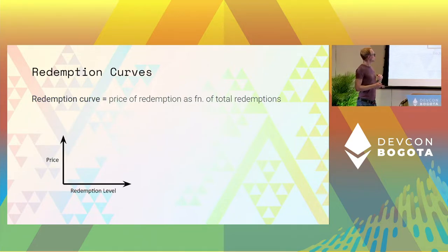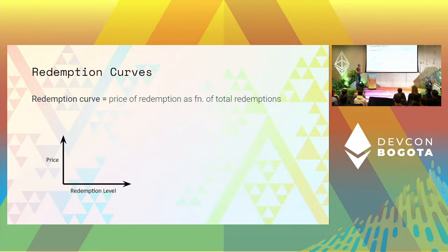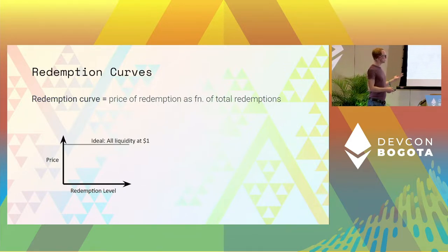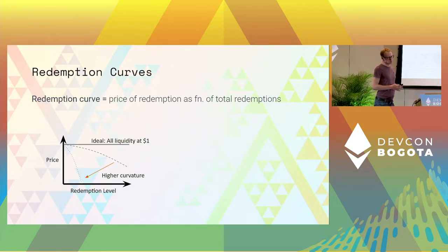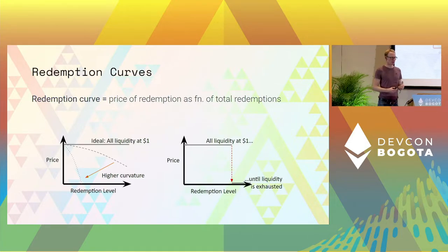The redemption curve has two axes. On one axis you have the redemption level, which is basically the amount of stablecoins being redeemed. On the other axis you have the redemption price that the mechanism offers to the redeemer. We look at what happens when people redeem more and more while market conditions don't change. Ideally you want a flat curve — you can always redeem at a dollar, which stabilizes the peg exactly at a dollar. The higher your curvature, the less you support the peg as more and more people redeem. The default behavior, also seen in pegged fiat currencies, is to support the peg as long as possible until your reserve is empty and then stop supporting it.